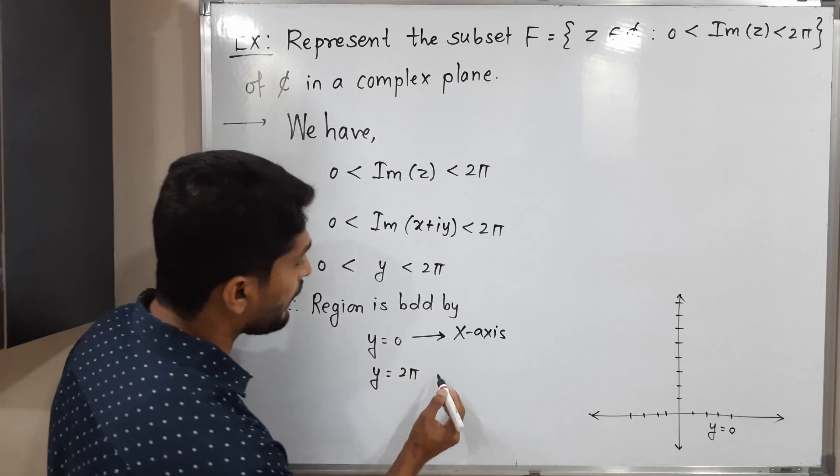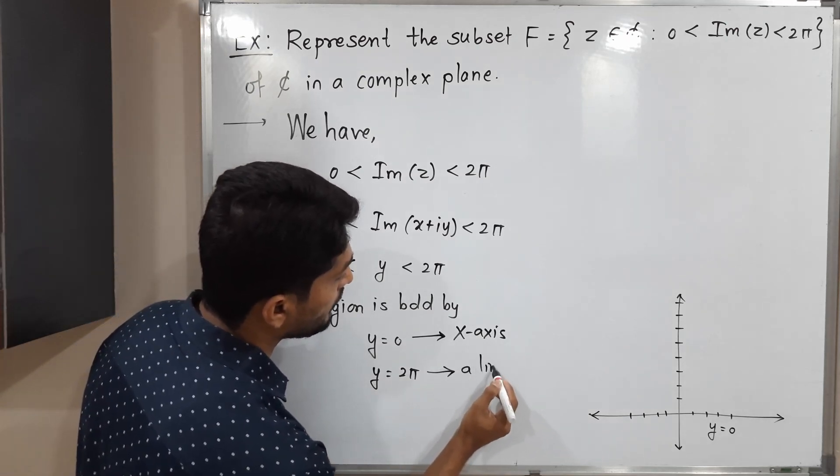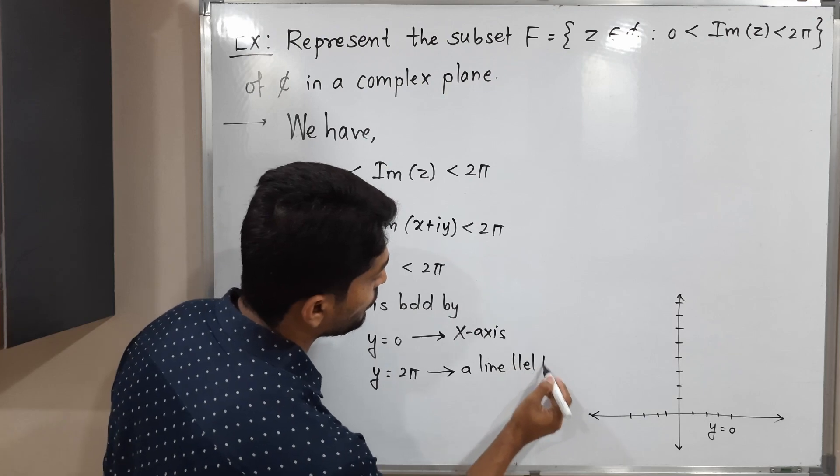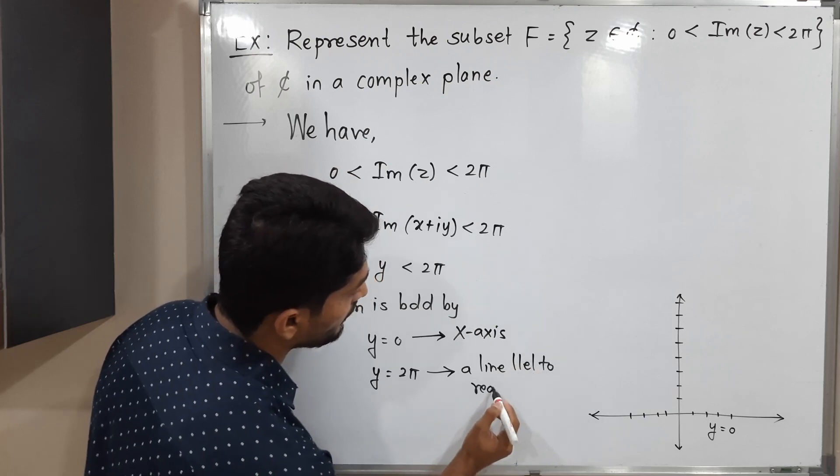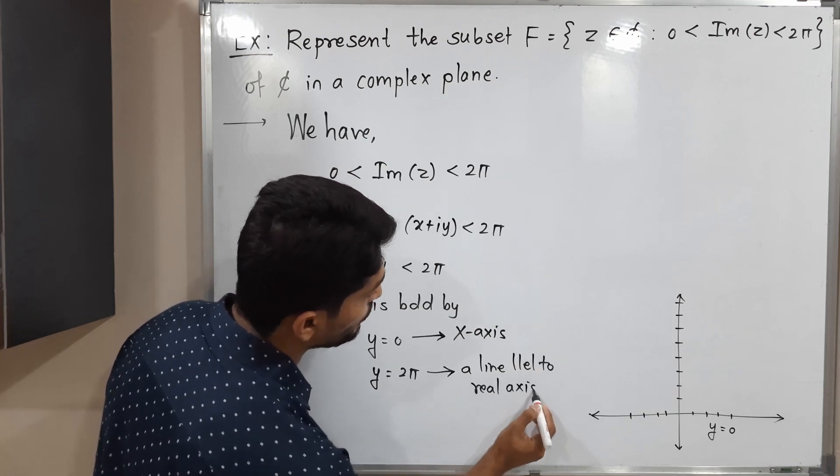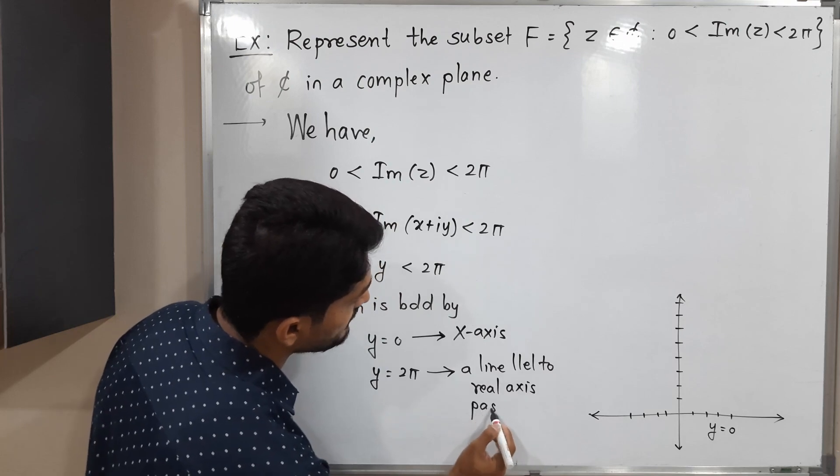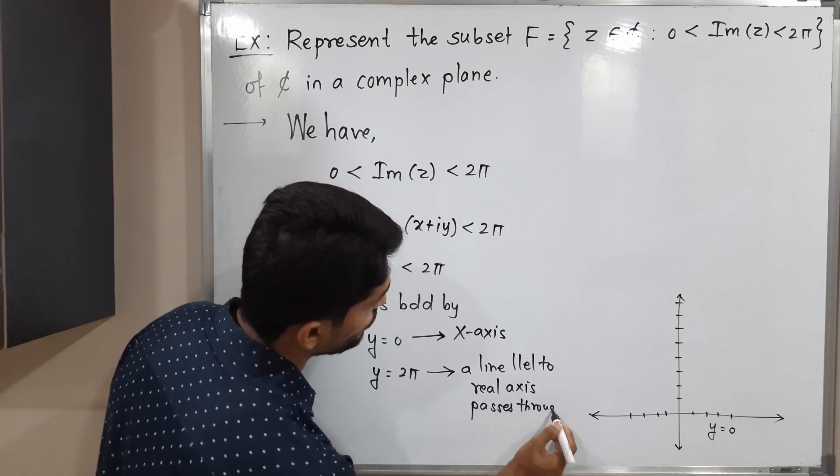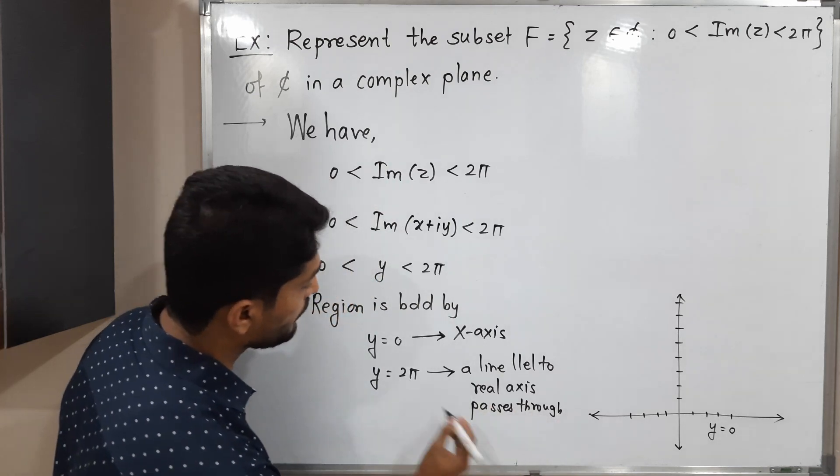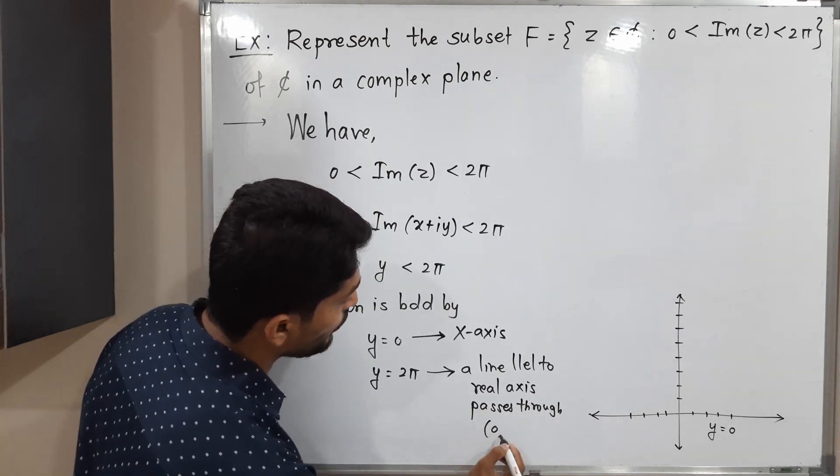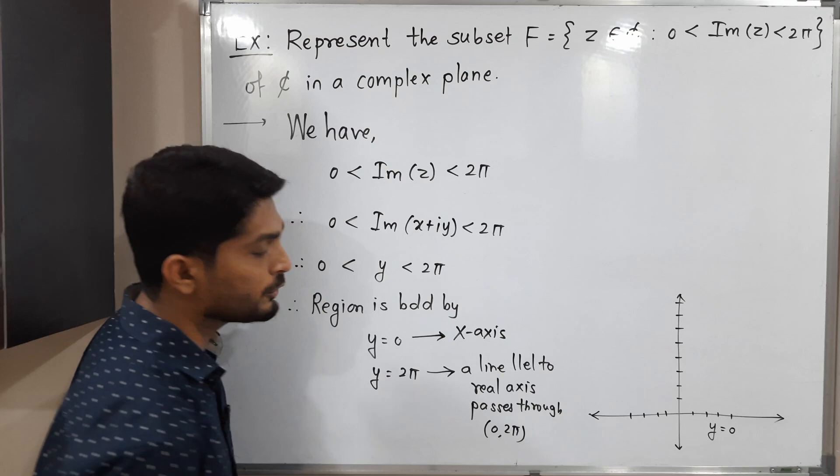And y equals 2π, so it's a line parallel to real axis. It is a line parallel to real axis and passes through that point 0, 2π, or you can write 2πi.